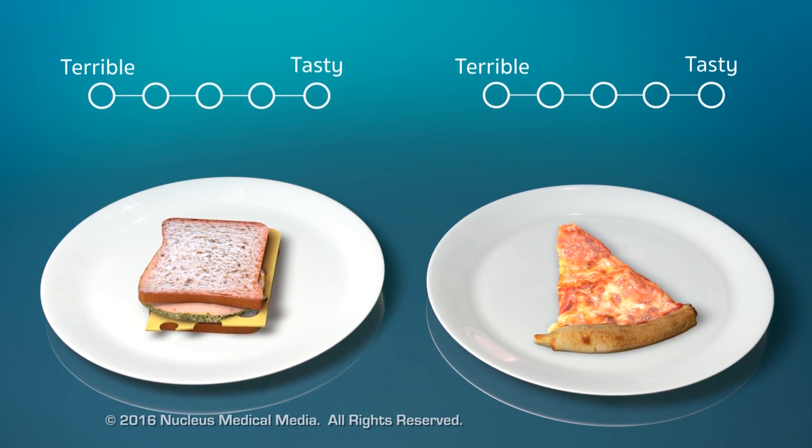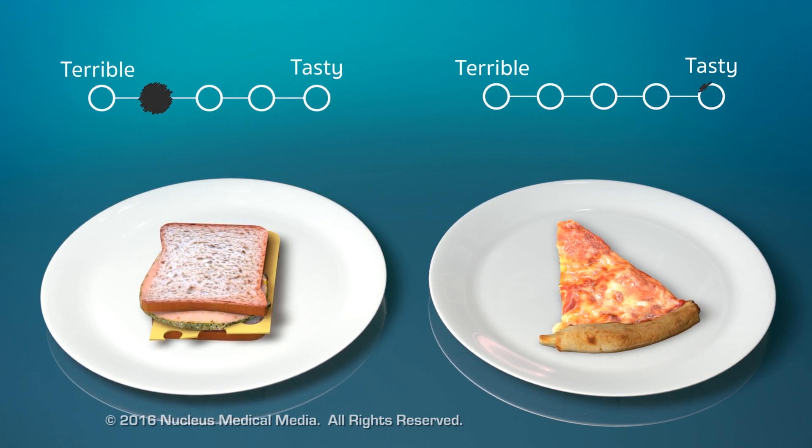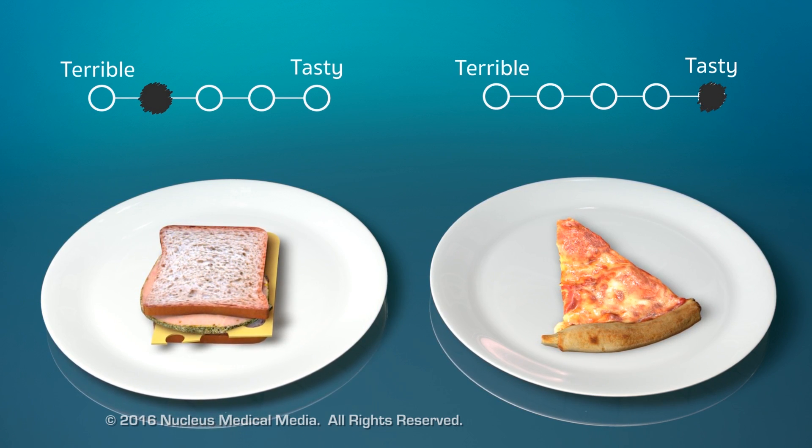As you can see, qualitative data consists of observable things that can be described and recorded in ways other than numerically.